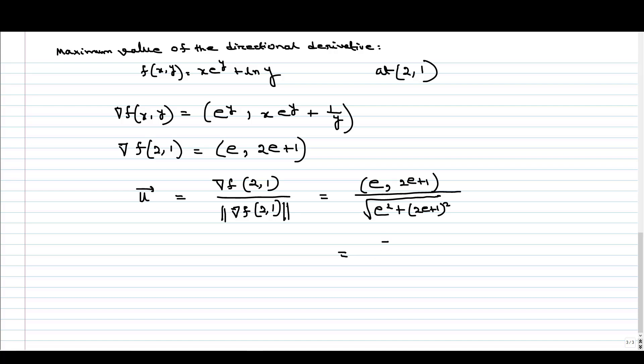So what we get here, it is (e, 2e+1), and the denominator we have sqrt(5e^2 + 4e + 1). So along this vector, the directional derivative will be maxima and the maximum value,